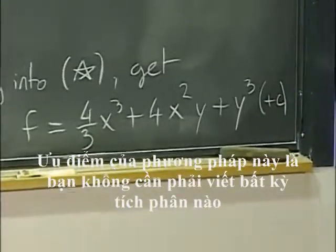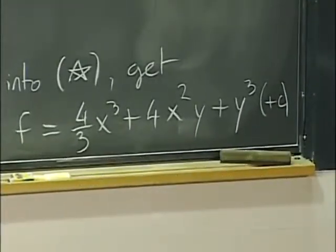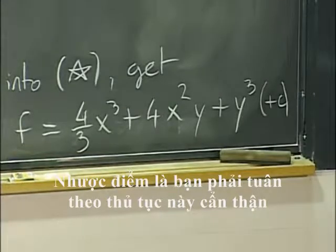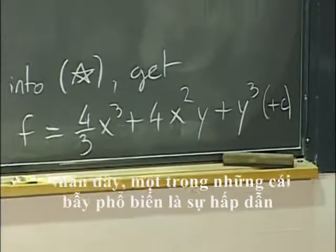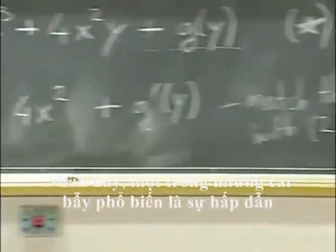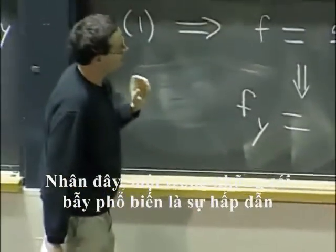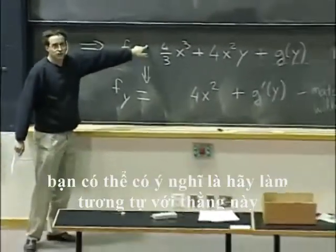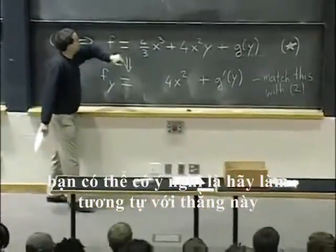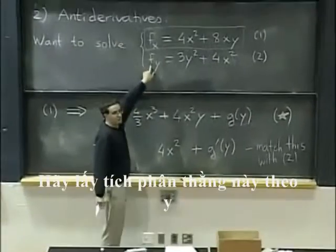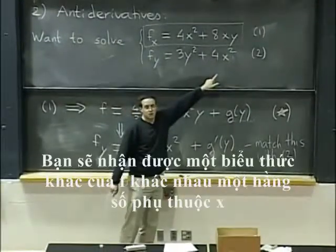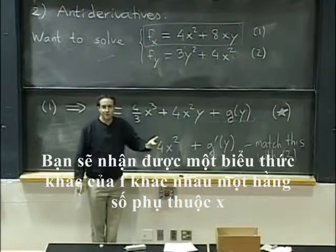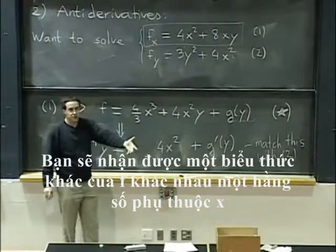So you see, the advantage of this method is you don't have to write any integrals. The small drawback is you have to follow this procedure carefully. So, by the way, one common pitfall, you know, it's tempting. So after you've done this, what's very tempting is to just say, oh well, let's do the same with this guy. Let's integrate this with respect to y. You'll get another expression for f up to a constant that depends on x. And then let's match them.